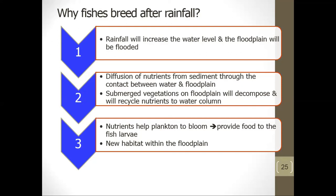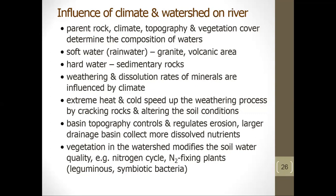Why do fish breed after rainfall? Rainfall increases the water level and the floodplain becomes flooded. Nutrients diffuse from sediment through contact between water and the floodplain. Submerged vegetation on the floodplain decomposes and recycles nutrients to the water column. These nutrients help plants bloom, providing food for fish larvae and creating new habitat within the floodplain.